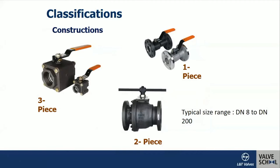We will look at the classification of ball valves based on construction. There is a three-piece construction, which has one body and two connectors bolted together. Three-piece construction is very good for inline maintenance — you need not remove the valve from the line. Of course you have to isolate the line, but you can remove three bolts, swing it like a fulcrum, and change all internals: ball, seat, body seals, and so on.